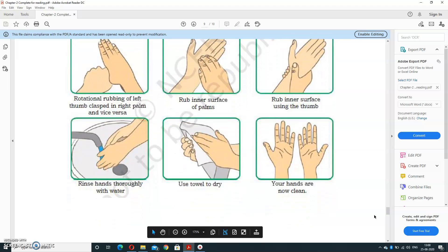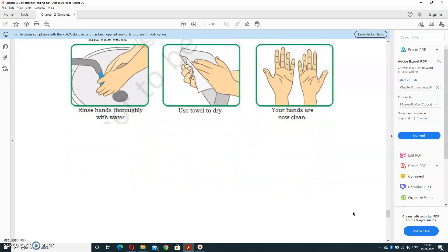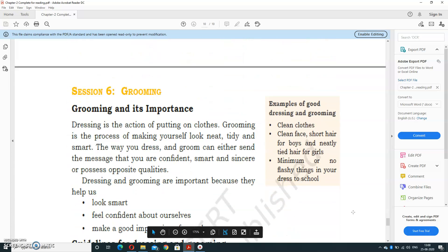Rinse hands thoroughly with water. Afterward, use a towel to dry, and at last your hands are now very clean. So this is the step-by-step process of how to clean your hands. Personal hygiene includes cleaning your body, cleaning your clothes, and cleaning your environment where you are working.